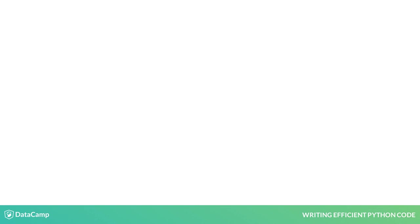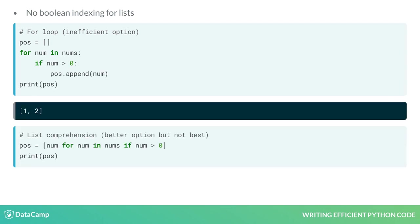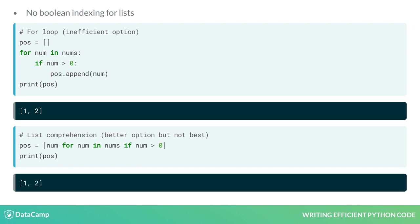To do this using a list, we need to write a for loop to filter the list, or use a list comprehension. In either case, using a NumPy array to index is less verbose and has a faster runtime.